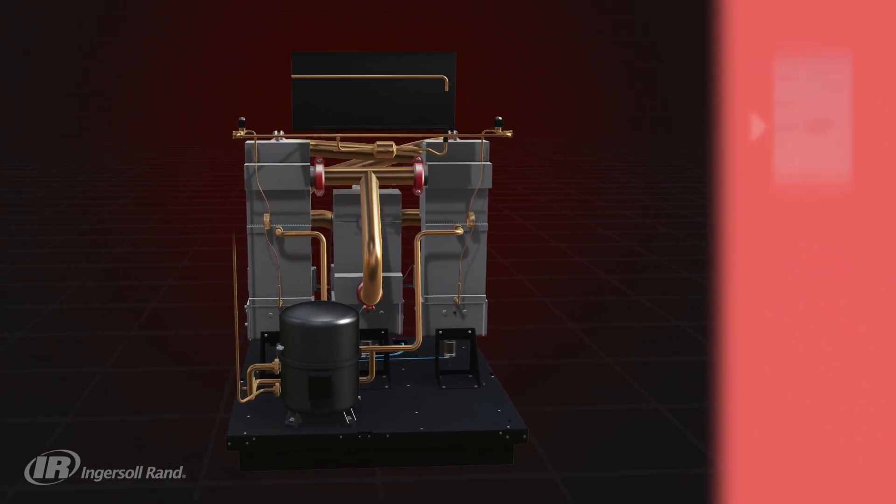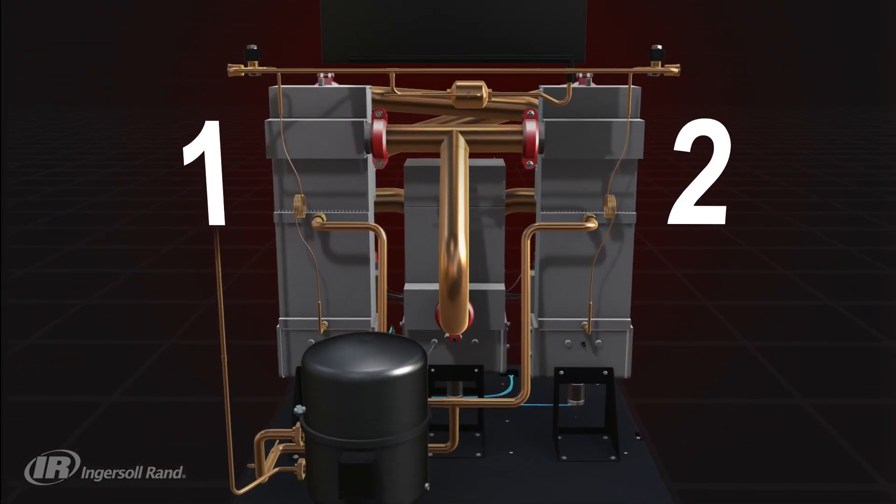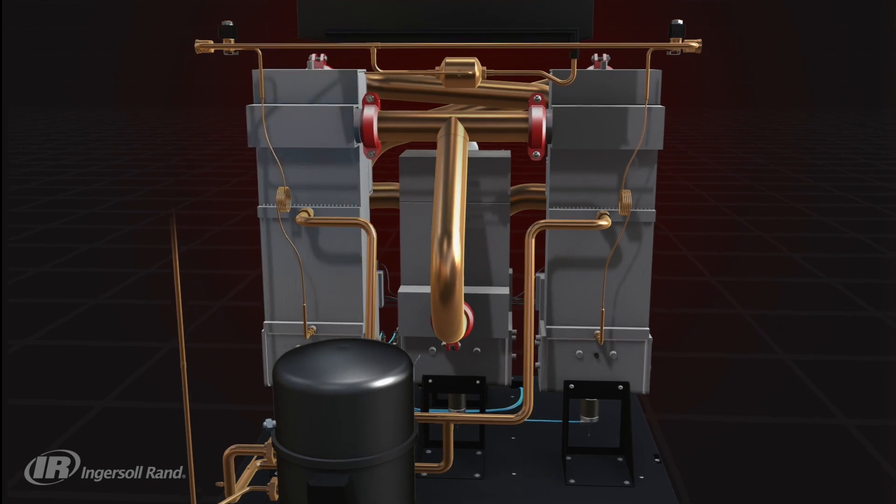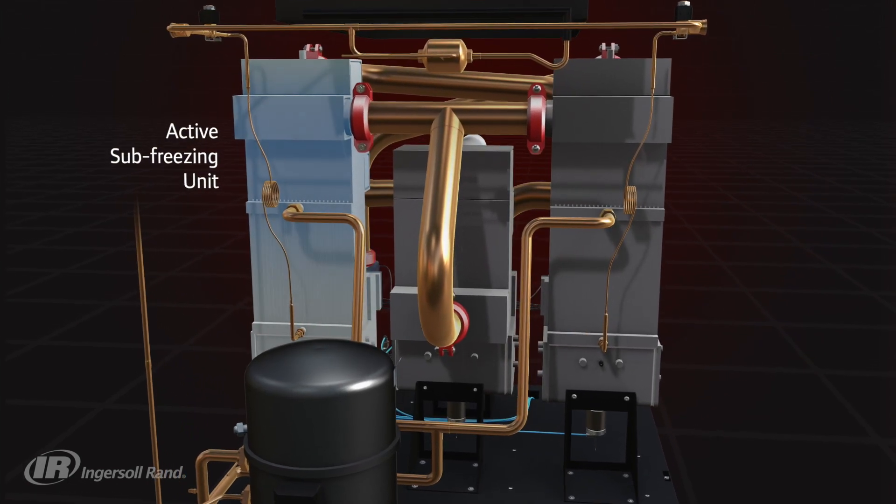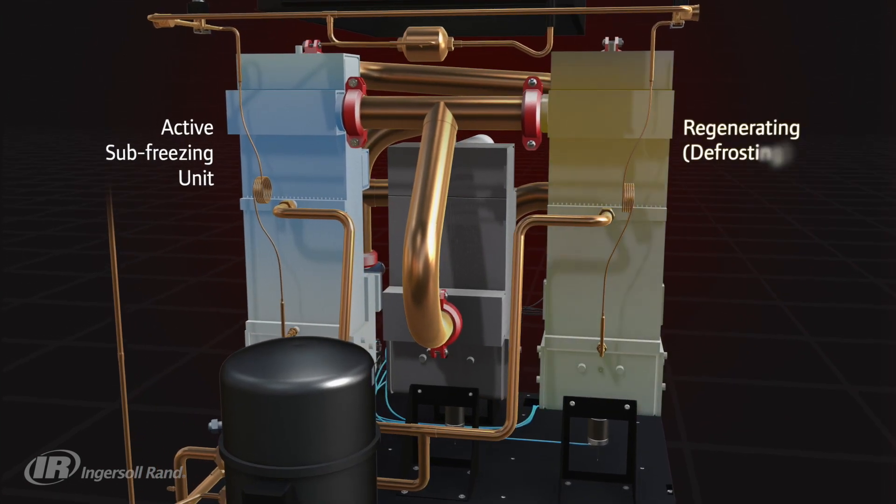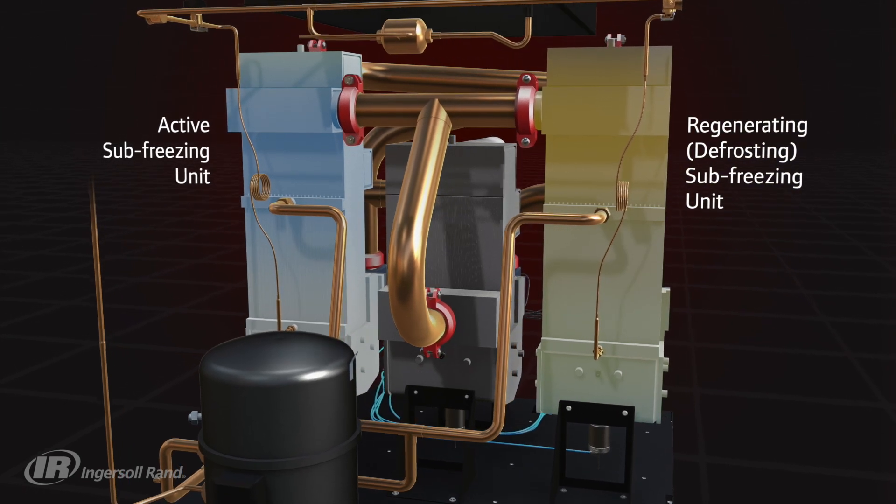At the heart of the dryer are two sub-freezing units that the drying process alternates between. So while one is actively freeze drying the air, the other is going through a defrosting cycle or regenerative phase.